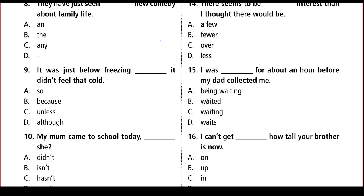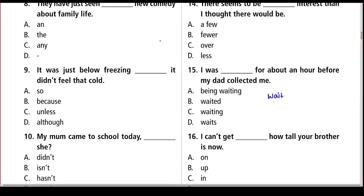The question says: 'I was ___ for about an hour before my dad collected me.' If we look at the question carefully, after checking the options, the verb in consideration is 'wait' and we have to select the correct form of 'wait' from the four options. The easiest way to do so is by checking the words before the blank and after the blank. After the blank I'm not really getting any hint.